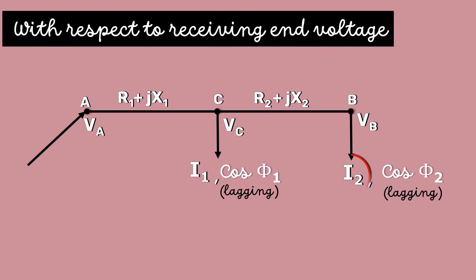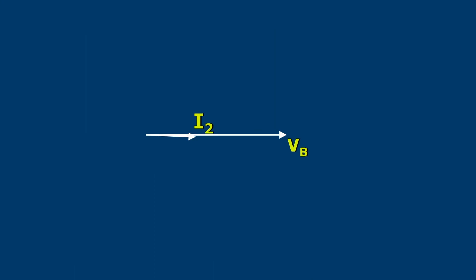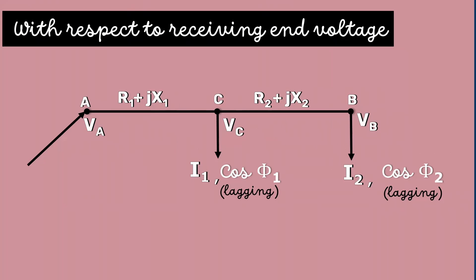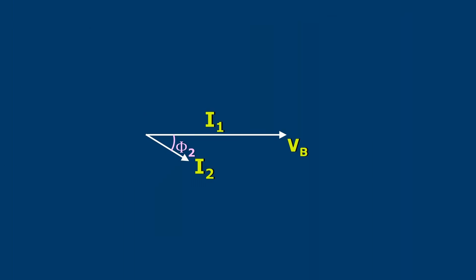Next, let's represent I2. Since that load has a lagging power factor of cos phi2, the current I2 lags the voltage VB by an angle phi2. Similarly, I1 lags the voltage VB by an angle phi1.